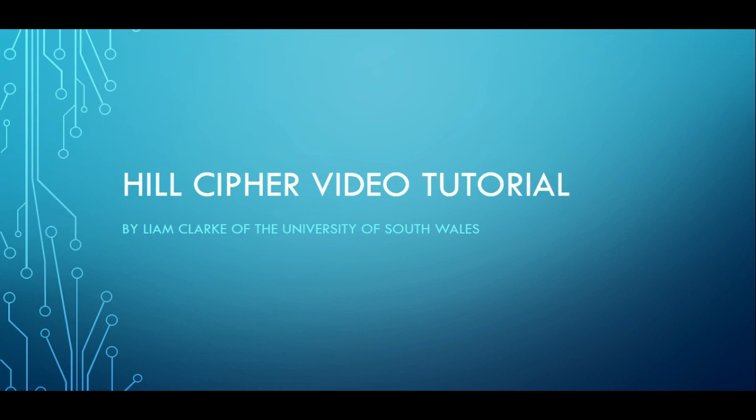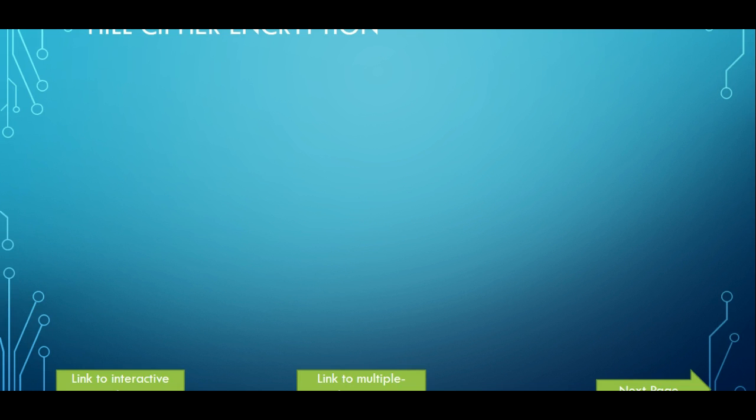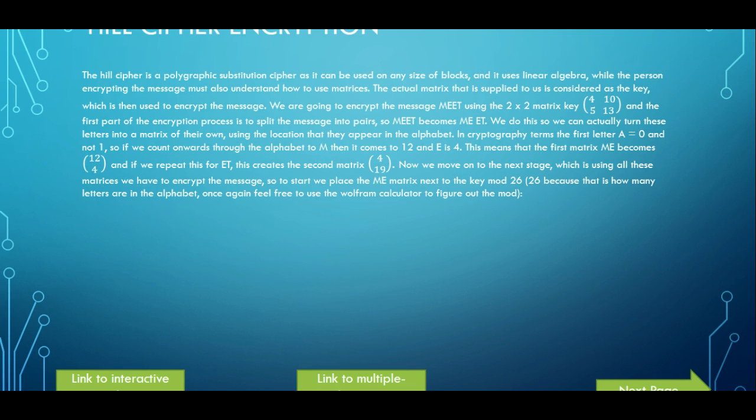The Hill Cipher video tutorial. There's a lot of matrices involved but I'm able to explain to you how it works as we go on. Once again, this video should be fairly short, so it shouldn't be drawn out too much. The Hill Cipher is a polygraphic substitution cipher as it can be used with any size of blocks.